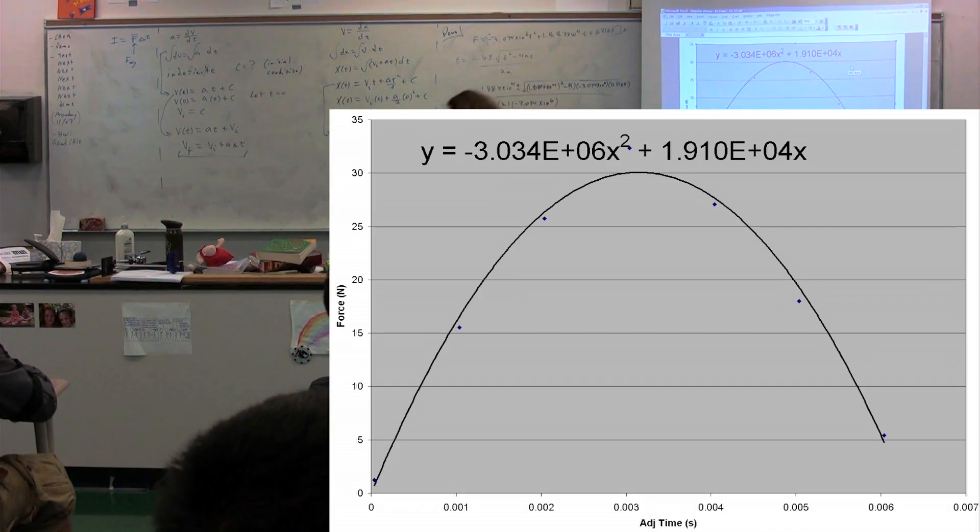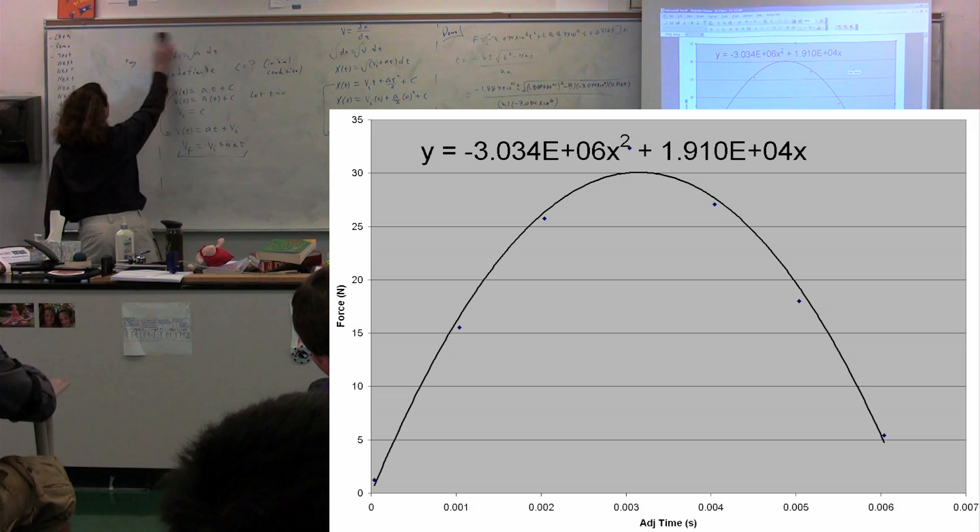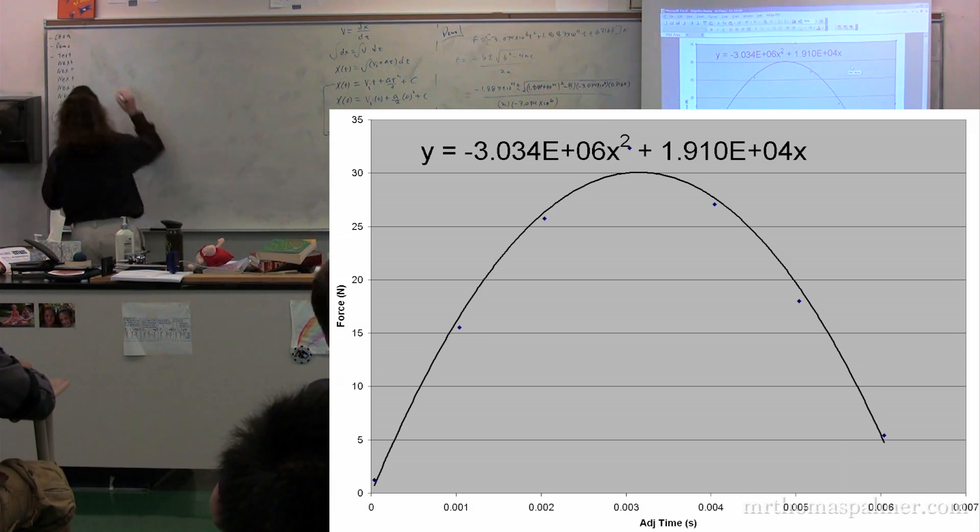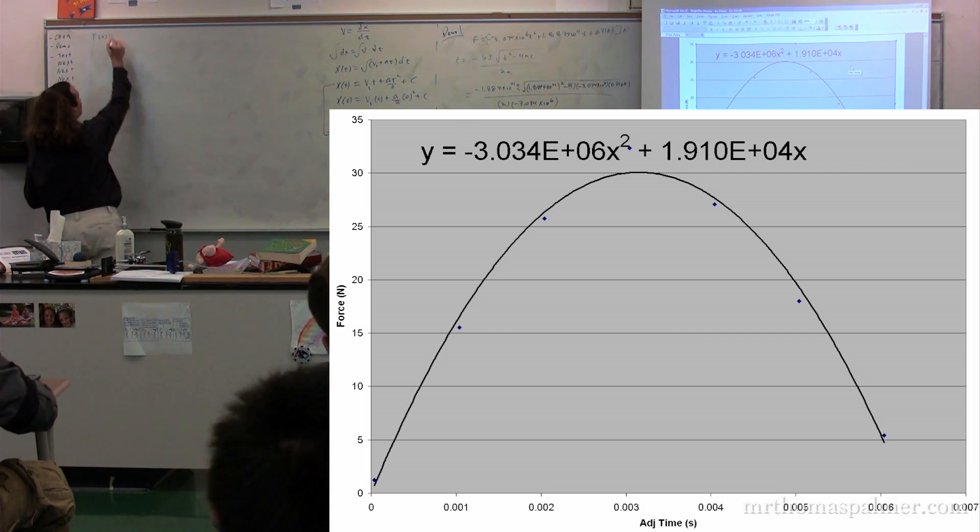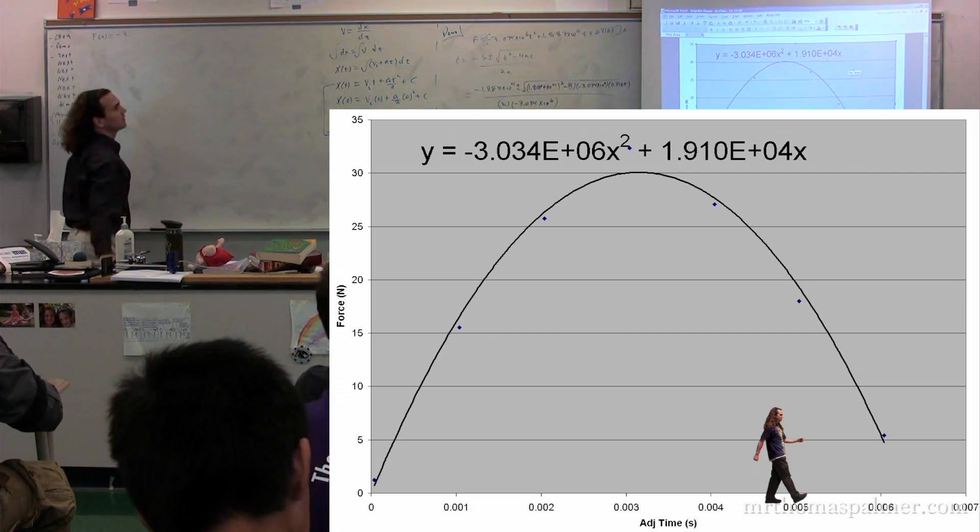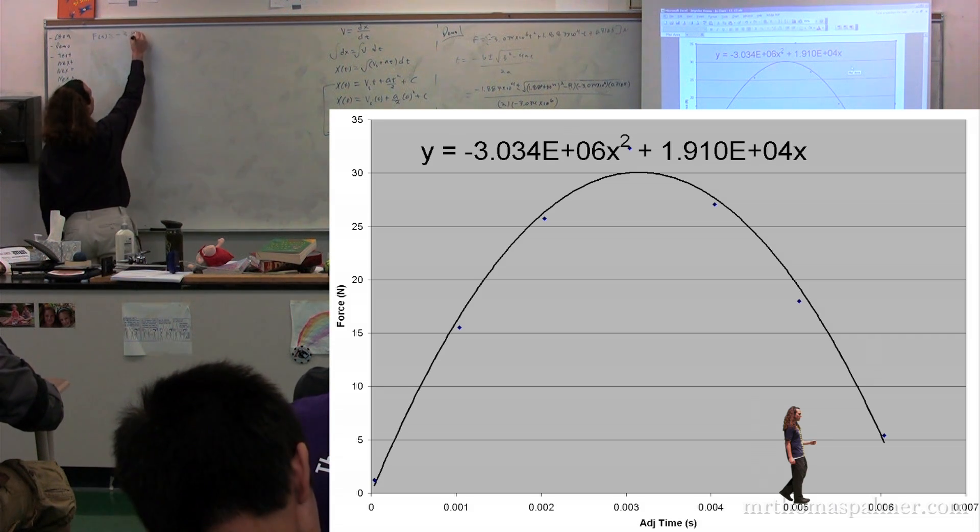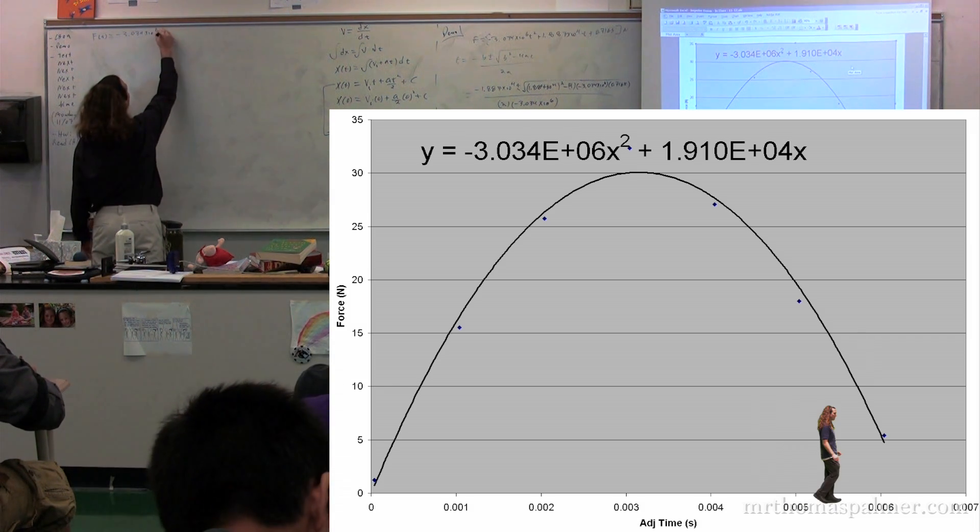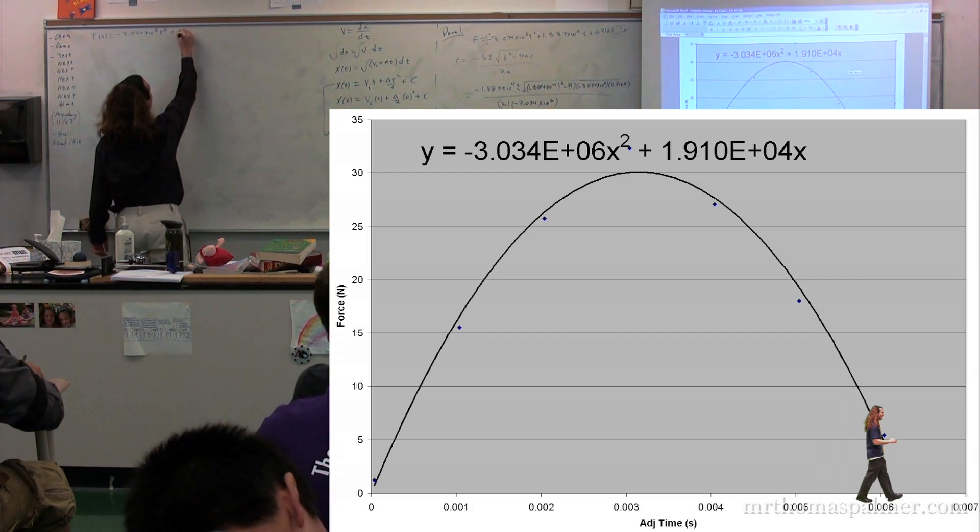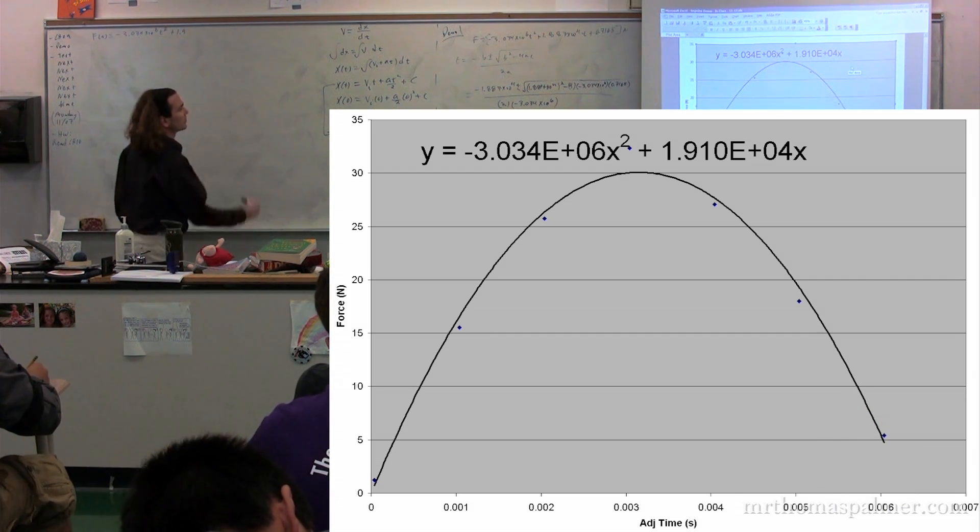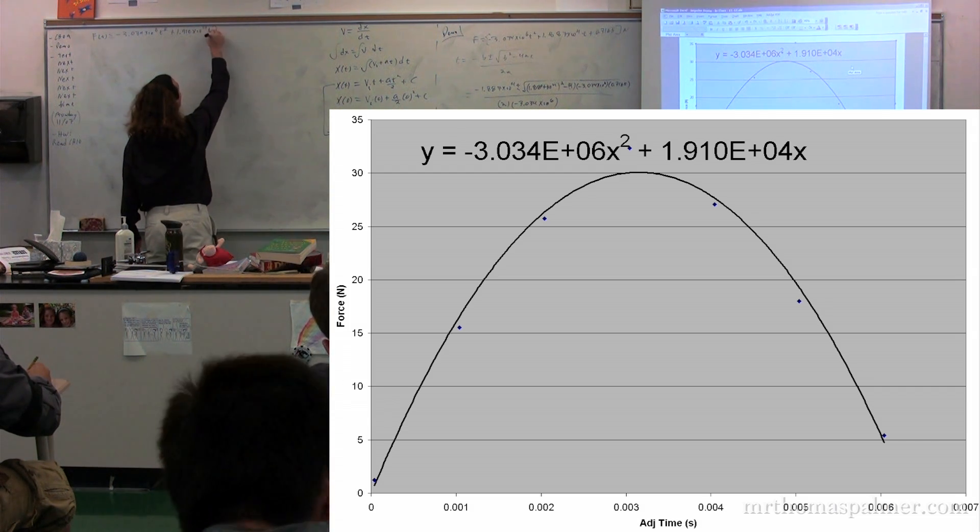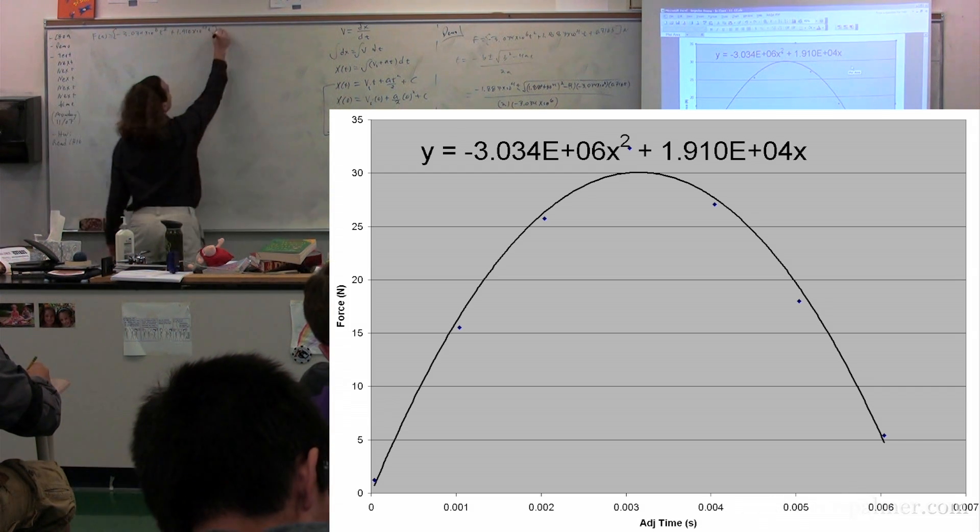So we now have our force as a function of time. So it is equal to negative 3.034 times 10 to the 6th times t squared plus 1.90 times 10 to the 4th times t in newtons.